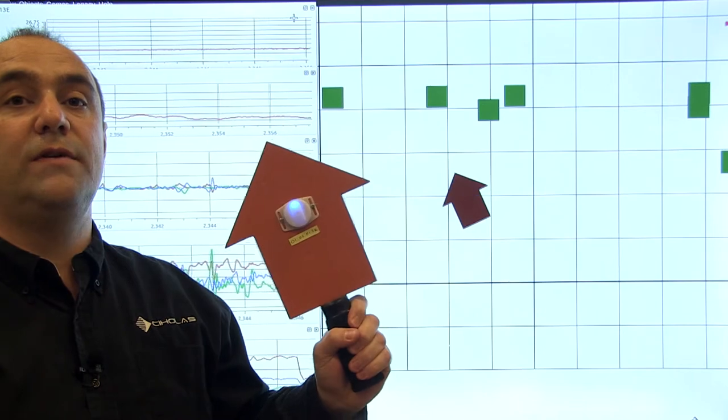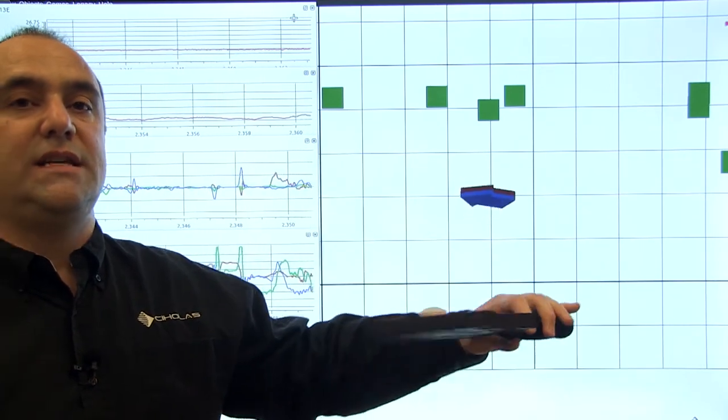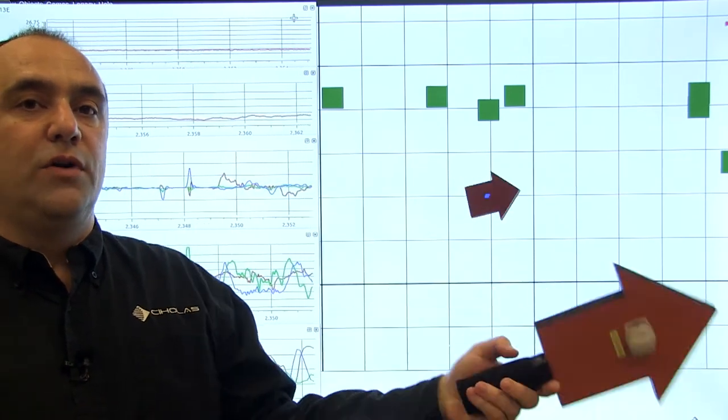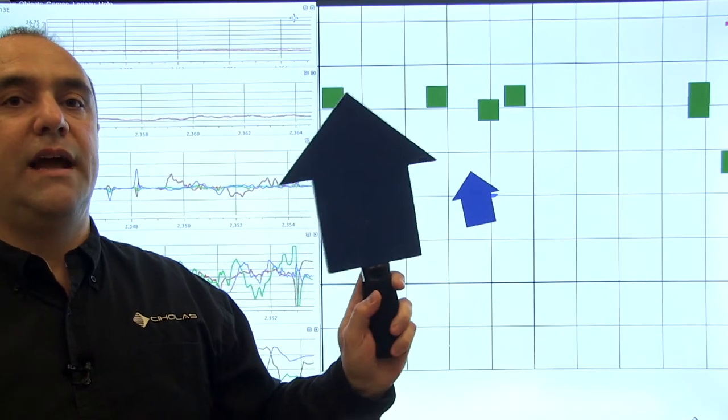So as I move the sensor around, you should be able to see the arrow move in the same direction that I'm moving the arrow on the screen.